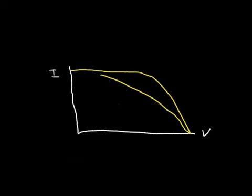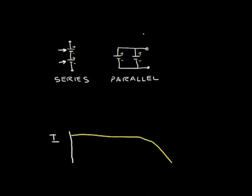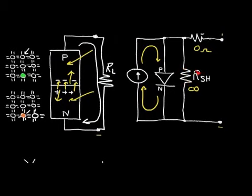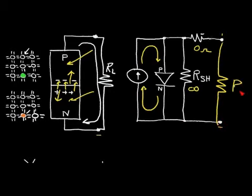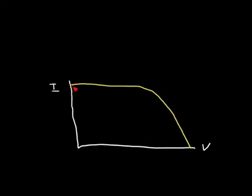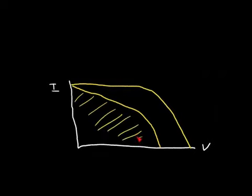Now let's look at the shunt resistance R_sh. As this shunt resistance becomes smaller, more current is diverted into the shunt resistance and less power is available for the load resistor. The curve tends to shift, and again the area — representing extractable power — is diminished.